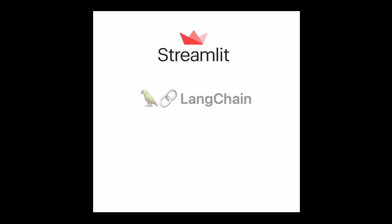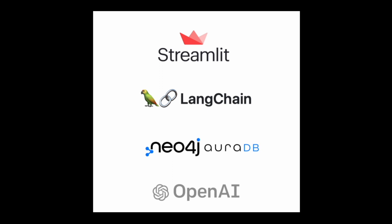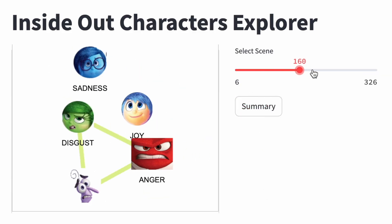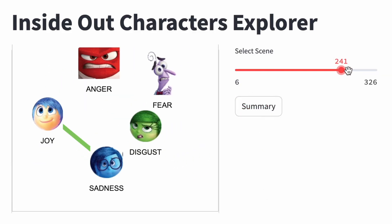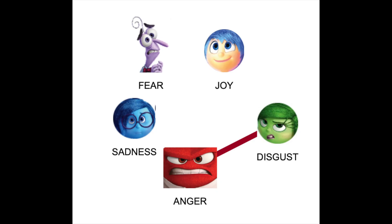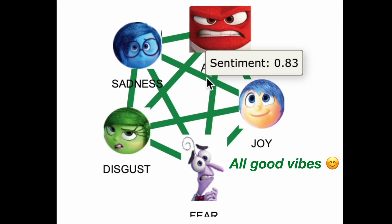I made a Streamlit app powered by LangChain, Neo4j, and GPT-API. You can slide through the scenes to see how characters interact with each other. The colors show sentiments in the interactions.